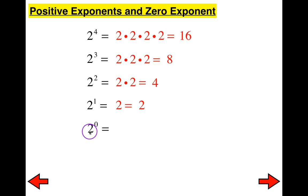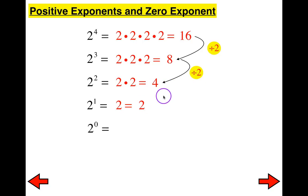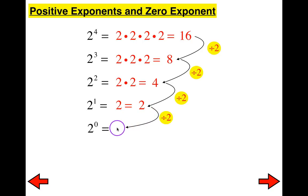Now, how do I repeat a two zero times? Let's pause and look for a pattern. How did 16 become eight? I divided by two. How did eight become four? I also divided by two. And how did four become two? I divided by two again. So you can continue this pattern — if I divide by two one more time, the answer would be one.